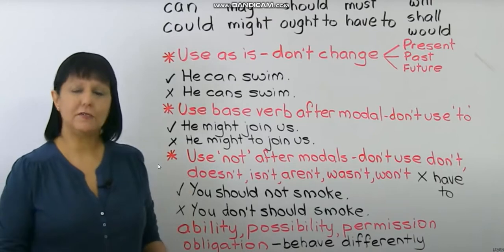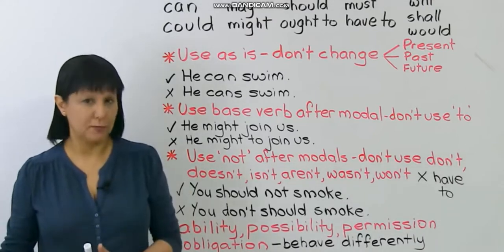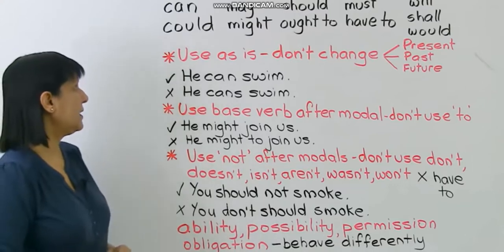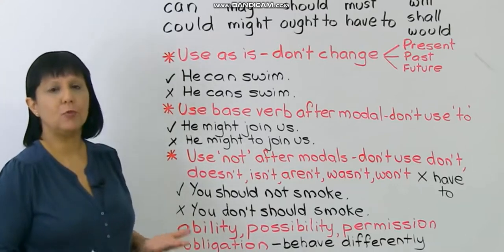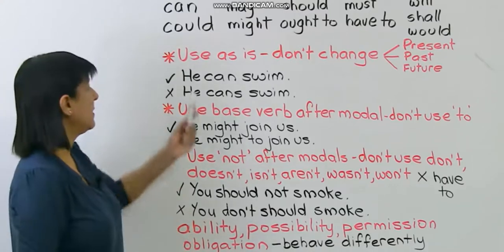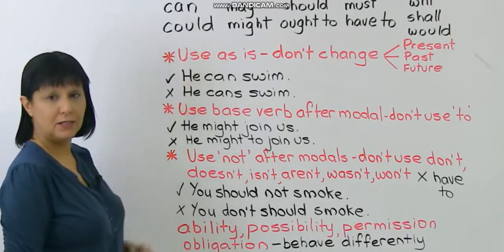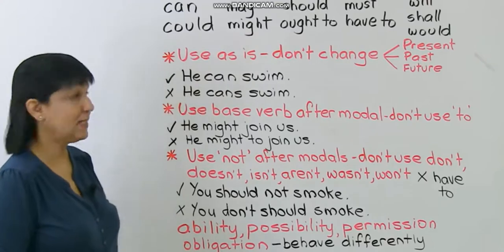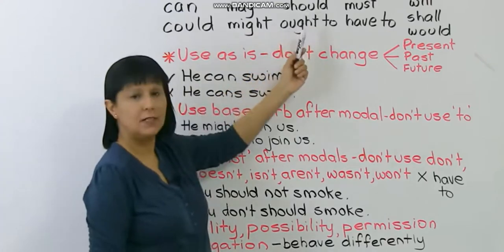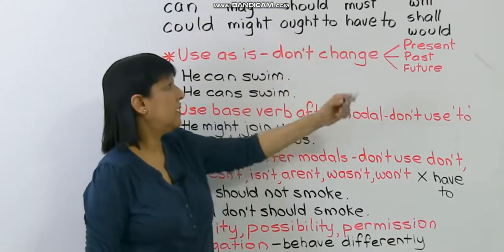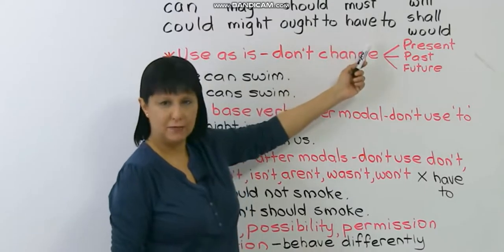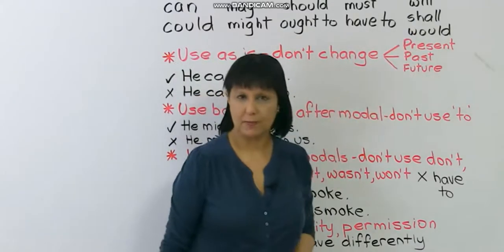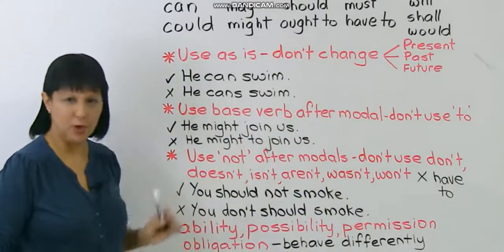Modal verbs behave differently from regular verbs, and that's why they're sometimes a little bit confusing. The most common modal verbs are: can, could, may, might, should, ought to, must, have to, will, shall, and would.